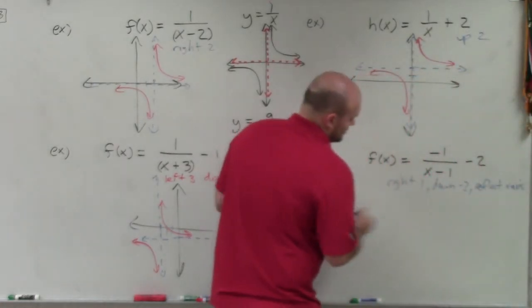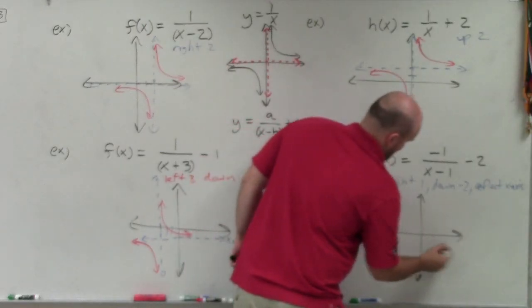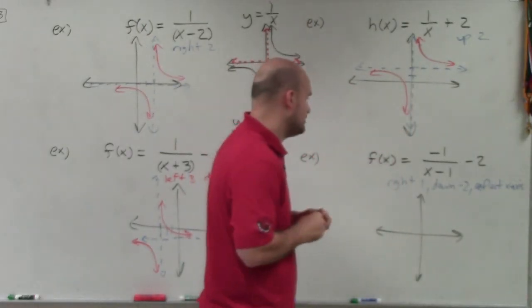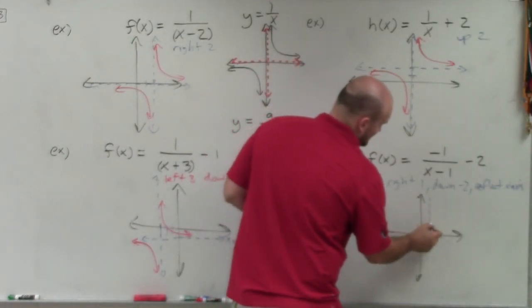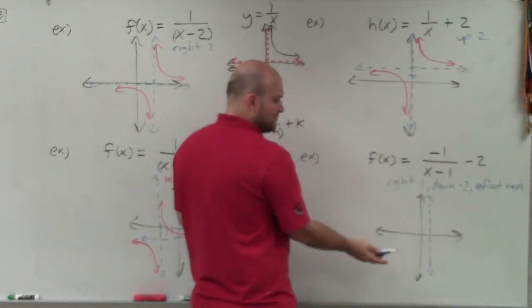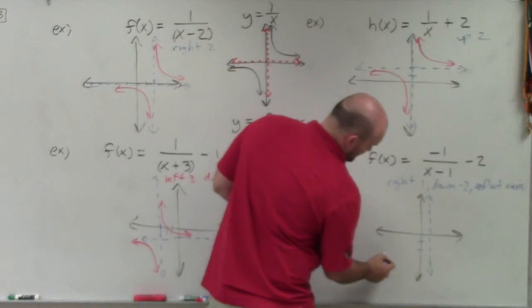OK, so we go ahead and graph it. OK, if I go ahead and graph it here, asymptote is being shifted to the right 1. So therefore, instead of it being at 0, my vertical asymptote is going to be x equals 1. I'm shifting my graph down 2. So instead of my horizontal asymptote being at 0, it's now going to be at negative 2.